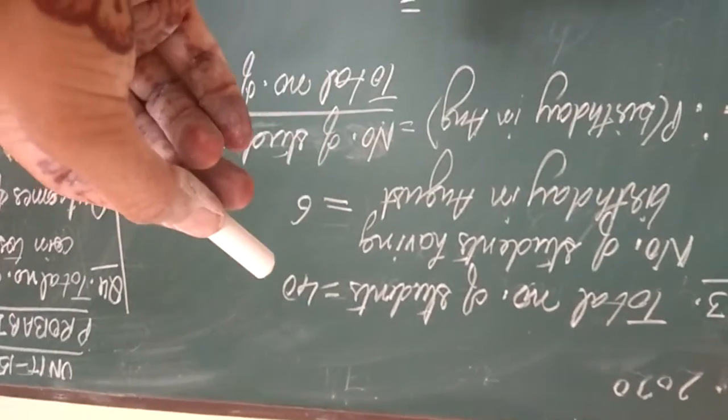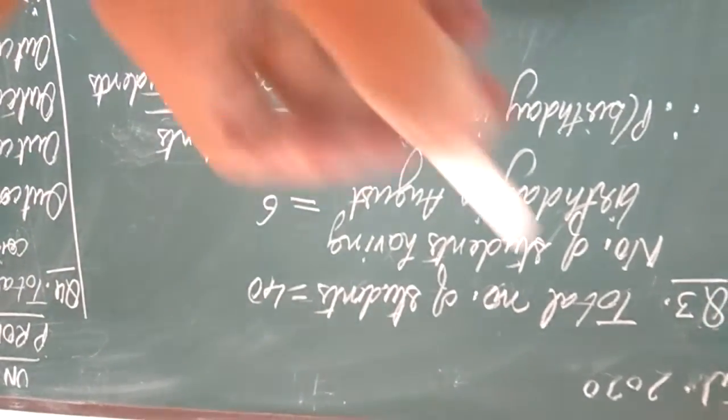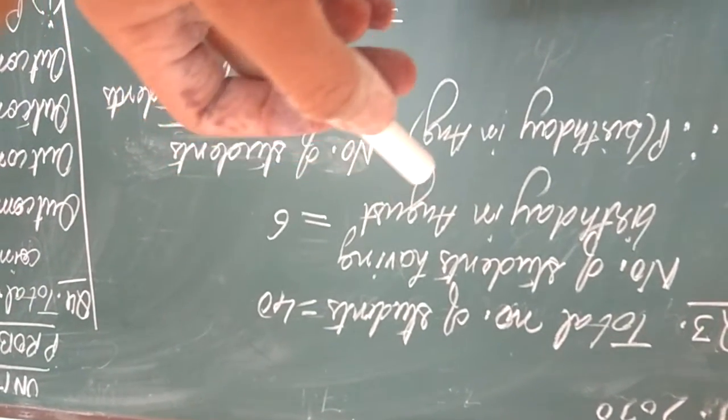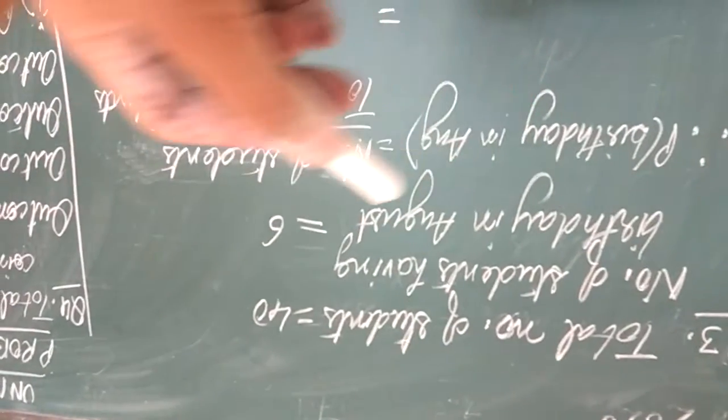First of all, we will write total number of students on which the survey was done is equal to 40. And if they are asking about the students having the birthday in the month of August, so we will write number of students having birthday in August is equal to 6.